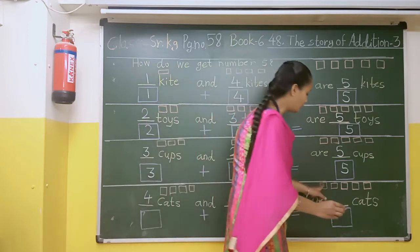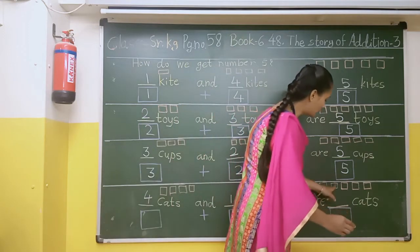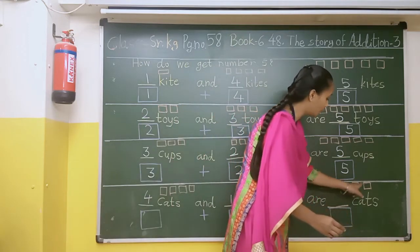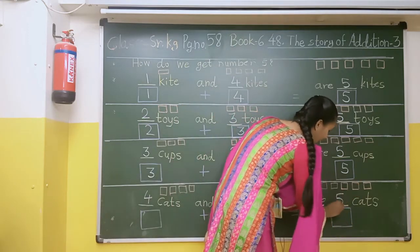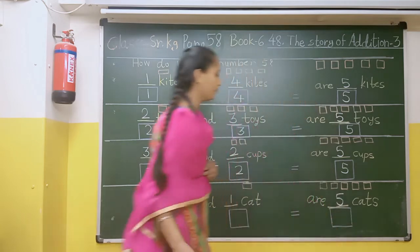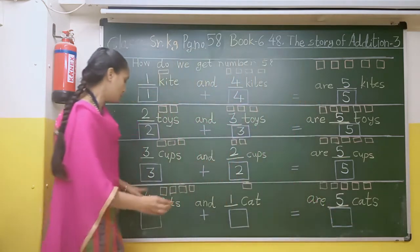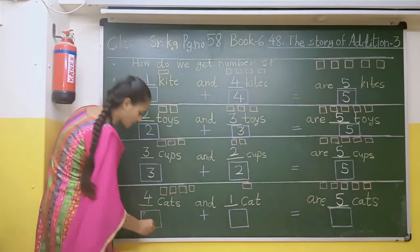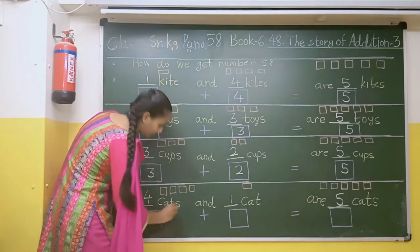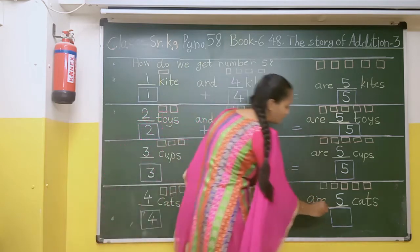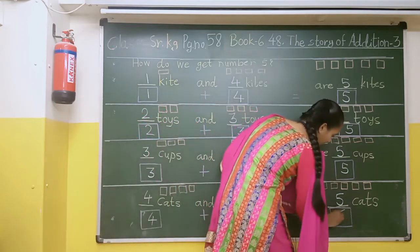How many all together? 1, 2, 3, 4, 5. So here we will write number 5. So 4 plus 1 is equal to 5.